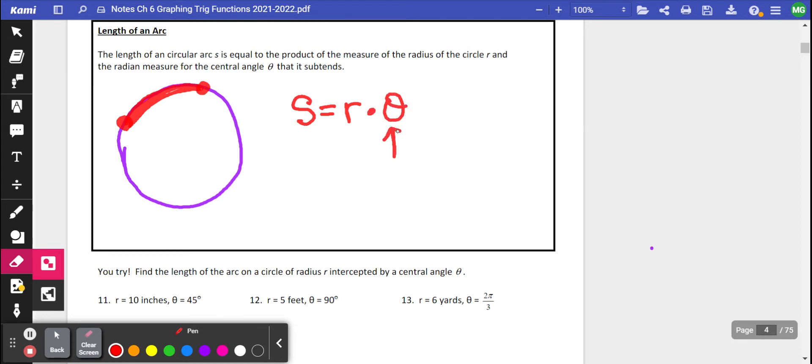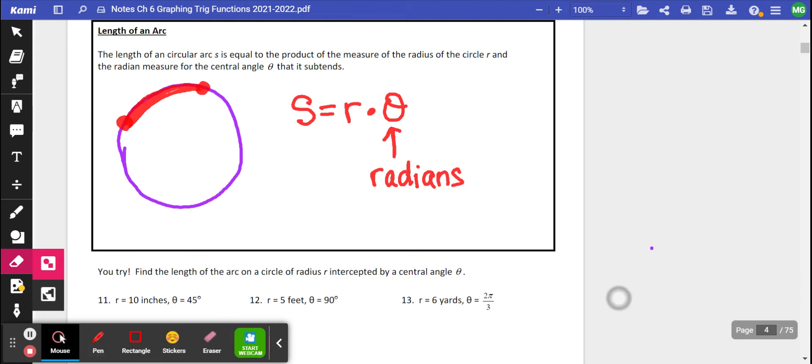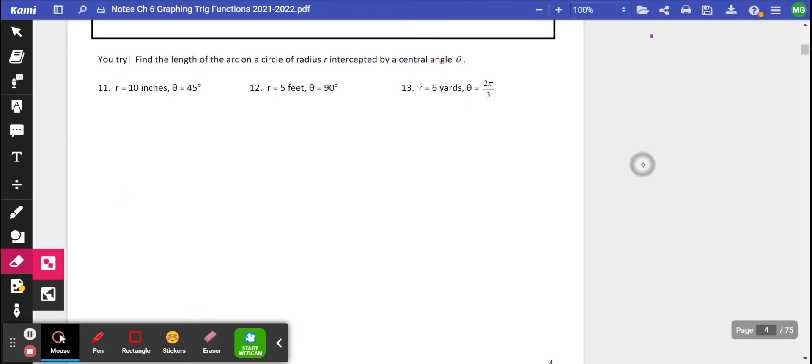Now, the only thing you have to remember is that theta has to be measured in radians. So if I give you an angle measured in degrees, you have to be able to convert that to radians. Pretty simple formula if you ask me. So let's go ahead and do a couple of problems together.